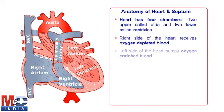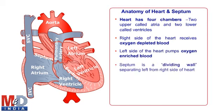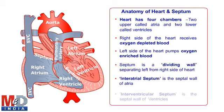This is a cross-sectional view of the heart. The septum divides the heart into left and right. Blue color represents oxygen-depleted blood in the right side of the heart, while red color represents oxygen-enriched blood in the left side.